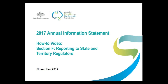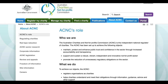Hi and welcome. In this video we will examine Section F of the 2017 Annual Information Statement, which deals with reporting to State and Territory Regulators. This section is new to the 2017 form and it is important. It includes questions designed to help the ACNC work with State and Territory Regulators to cut red tape and set in place streamlined reporting measures. One of the ACNC's objects is to promote the reduction of unnecessary regulatory obligations on the sector, and this section plays an important role in helping us achieve this.